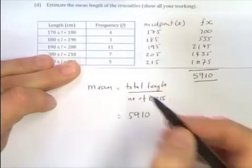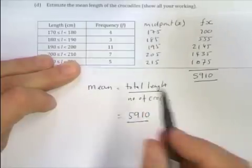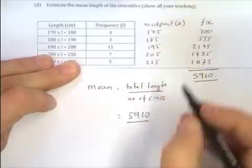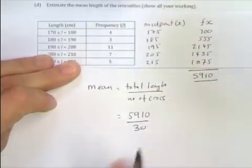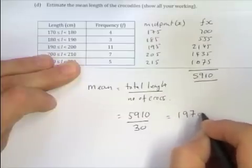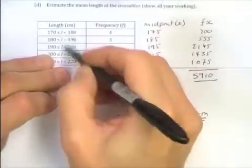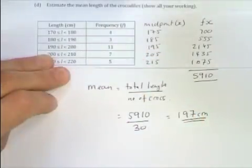But it's the number of crocodiles. And we're told in the question number of crocodiles was 30. Otherwise we just add these up and we get 30. It must be divided by the total number of crocodiles. So we do that and we get the mean length equals 197 centimeters. Now that makes sense because it's one of the middle values here.